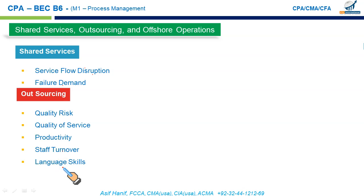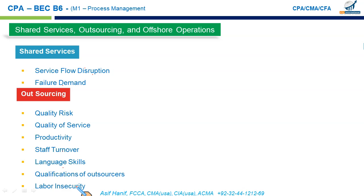Language skills can be an issue — many US banks have call centers in China and India, and callers routed there may encounter agents who are not as fluent in English. The qualifications of outsourcers are also important — external providers' credentials might be flawed. Finally, labor insecurity is a concern when local jobs are outsourced to a third country, creating greater insecurity in the home country.